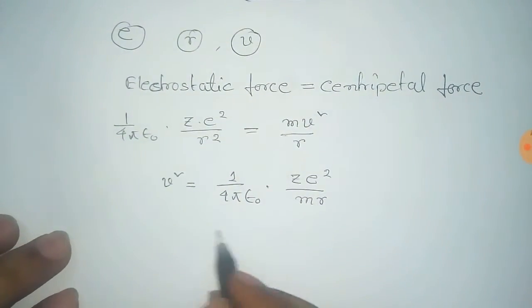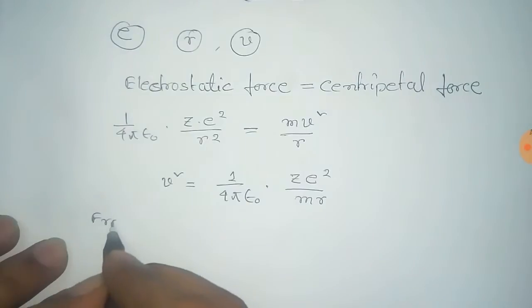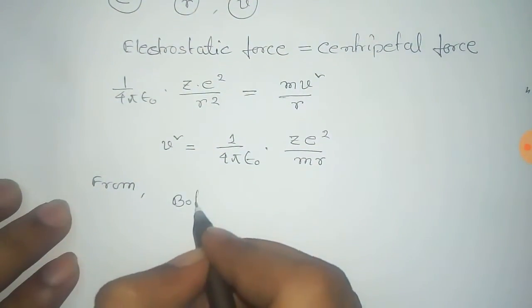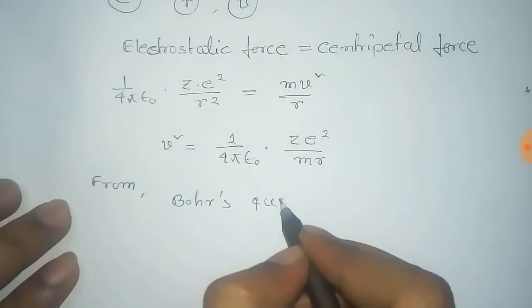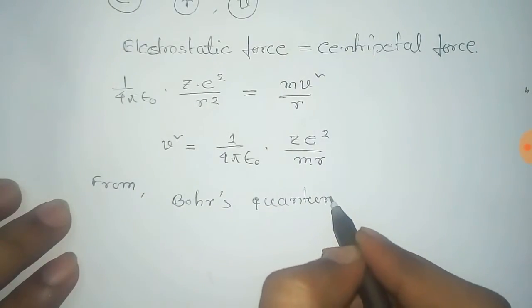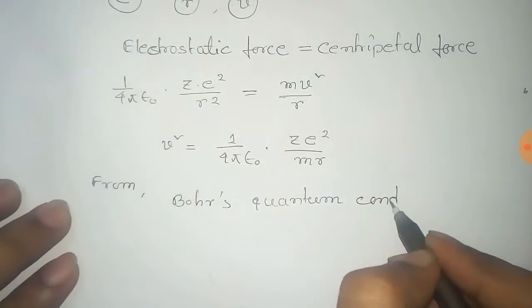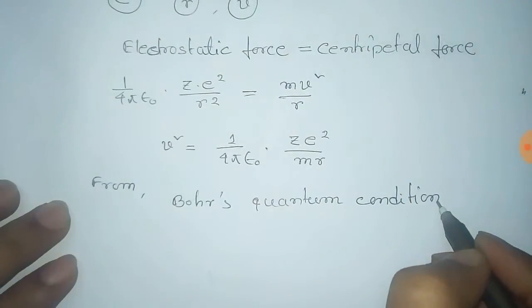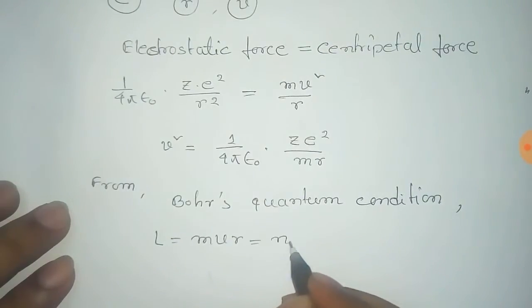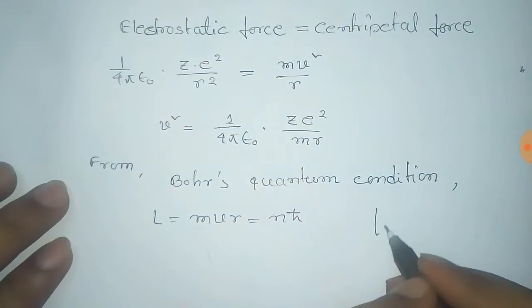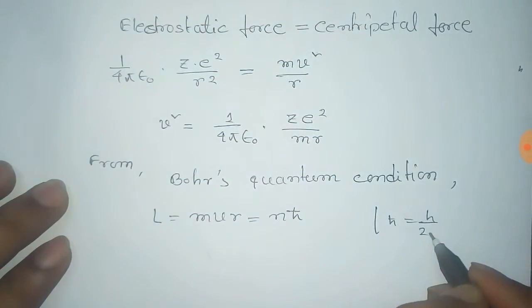Thus we get the value of V². Now from Bohr's quantum condition, we get that the angular momentum MVR equals Nℏ, where ℏ equals H/(2π), and H is Planck's constant.